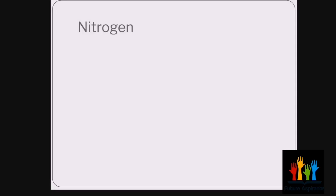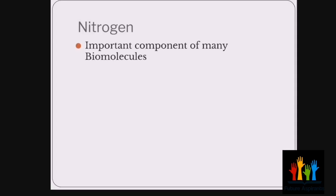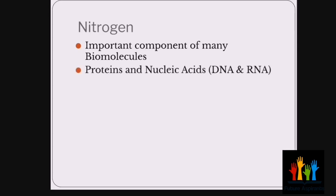When we talk about the nitrogen cycle, first of all we should know a little about nitrogen. Nitrogen is a very important component of many biomolecules — these are molecules that are found inside the bodies of living organisms and are very necessary for their survival, growth, maintenance, and cell structure. So that is why nitrogen is very important.